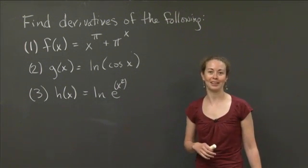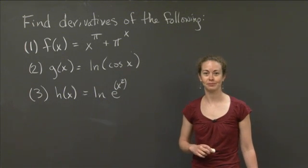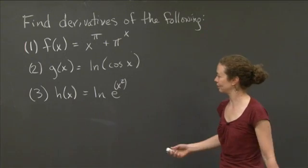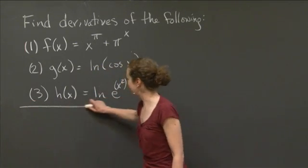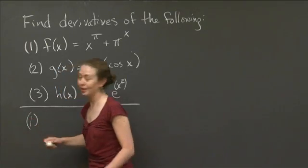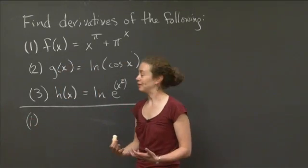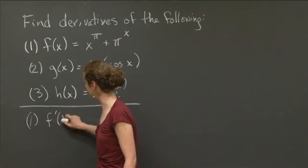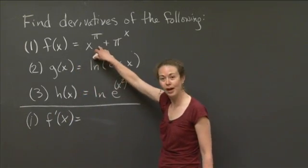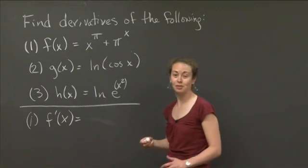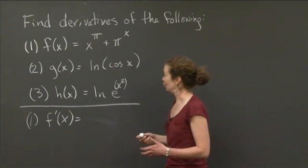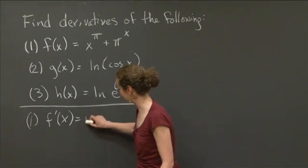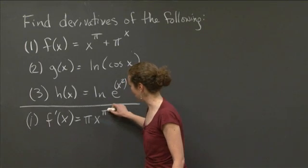I'm going to give you a moment to work on those, and then we'll come back and I will work them out. Let's start with the derivative of the first one. The reason I chose this one is because of a common mistake that people make. The derivative of x to the pi is nice and simple because that is our rule for powers of x — that derivative is pi times x to the pi minus 1.